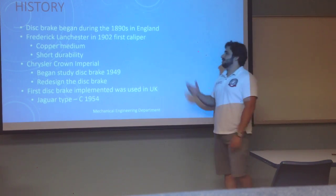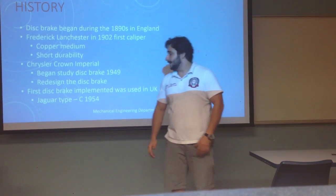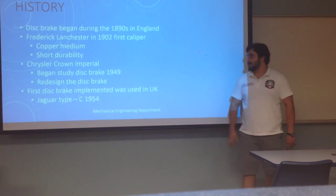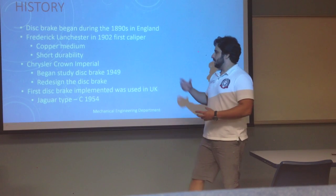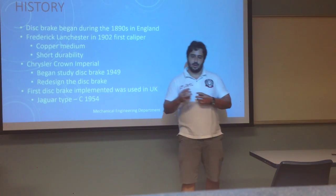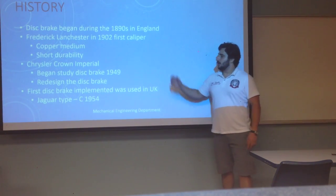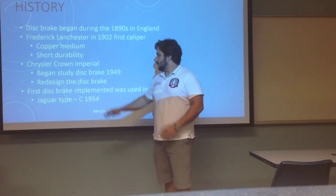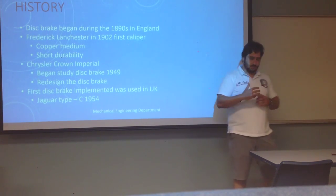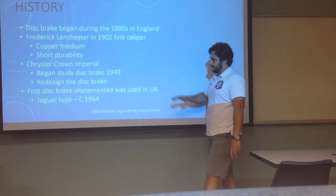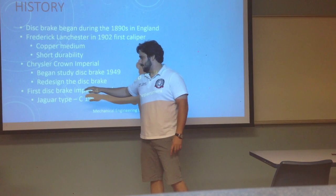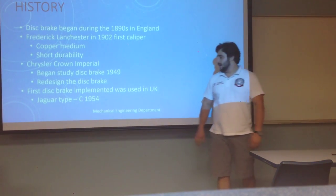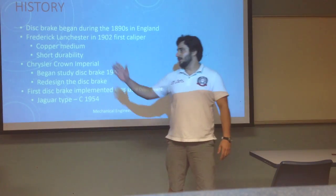For some history, disc brakes began during the 1890s in England. Frederick Lanchester in 1902 was the first to design the caliper — it was a copper medium, but had short durability because the copper wore off quickly. Girling Crown began studying this in 1949 and redesigned the disc brake to address complications. The first disc brake was implemented in the UK in the Jaguar C-Type in 1954.